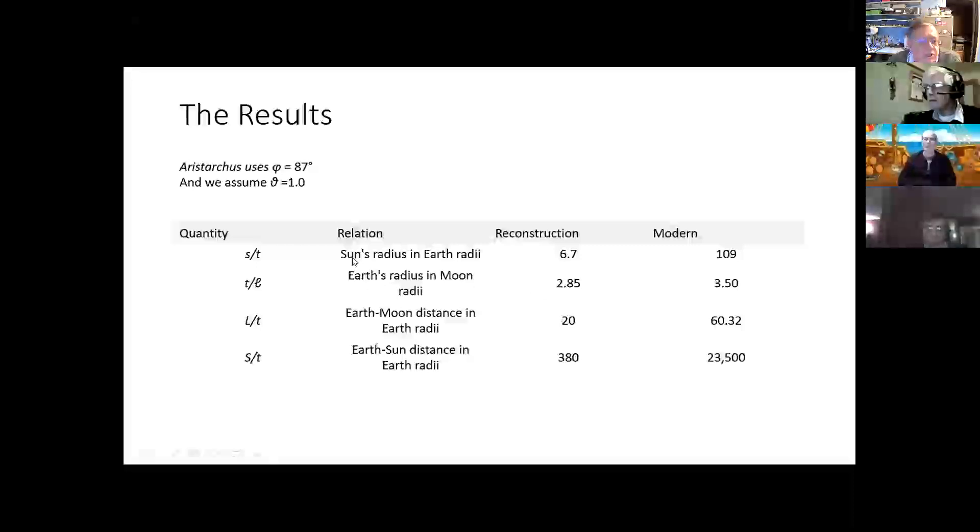So he worked out that the Sun's radius in terms of Earth's radius was 6.7 times bigger, and that the Earth was 2.85 times bigger than the Moon, and that the Earth-Moon distance was 20 times the size of the Earth, and that the Earth-Sun distance in Earth radii was 380. Now, you can see the modern numbers over here, so some of them were not particularly accurate. This one wasn't too bad, 2.85 versus 3, but it all fell to this number that he had in that very first observation of 87 degrees being a bit off.